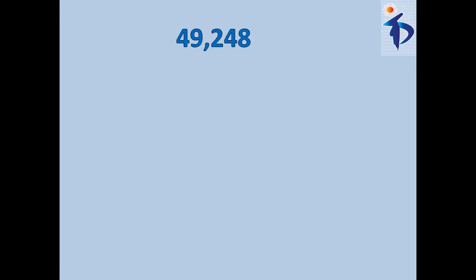Here we have the number 49,248. Instead of dividing the total number, I take the last three digits, that is 248. So 248 divided by 8: 8 times 3 is 24, and the remainder is 0. So the last three digit number is divisible by 8, and we can say that 49,248 is also divisible by 8.